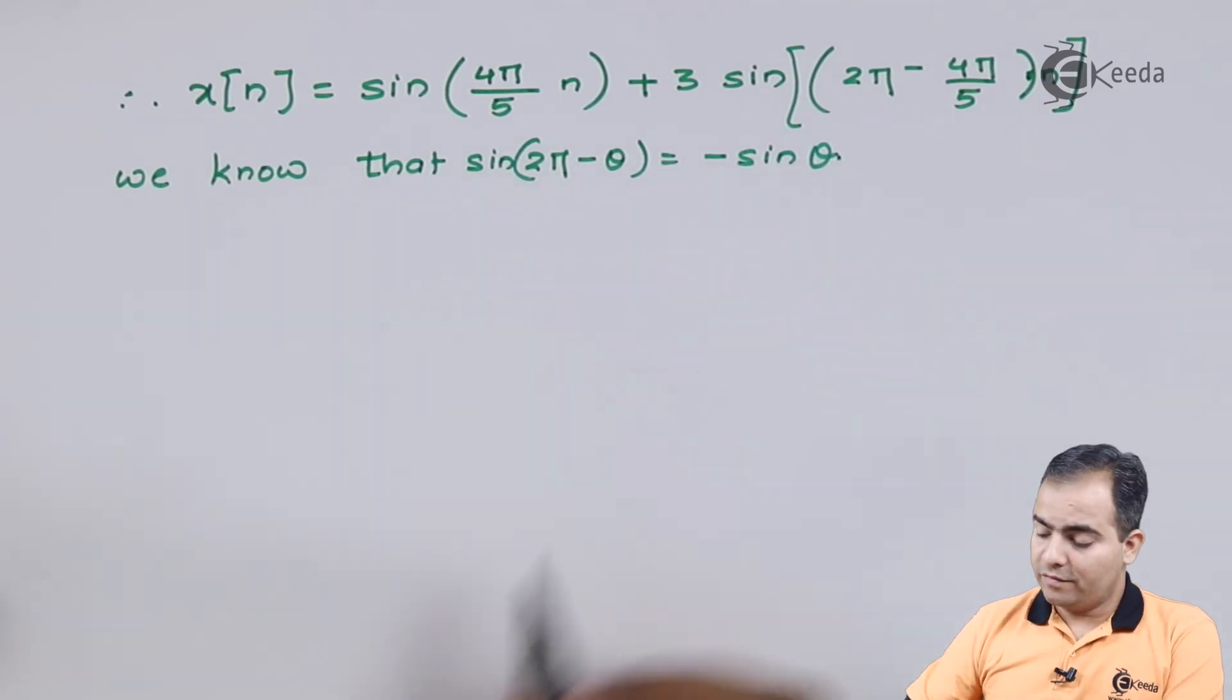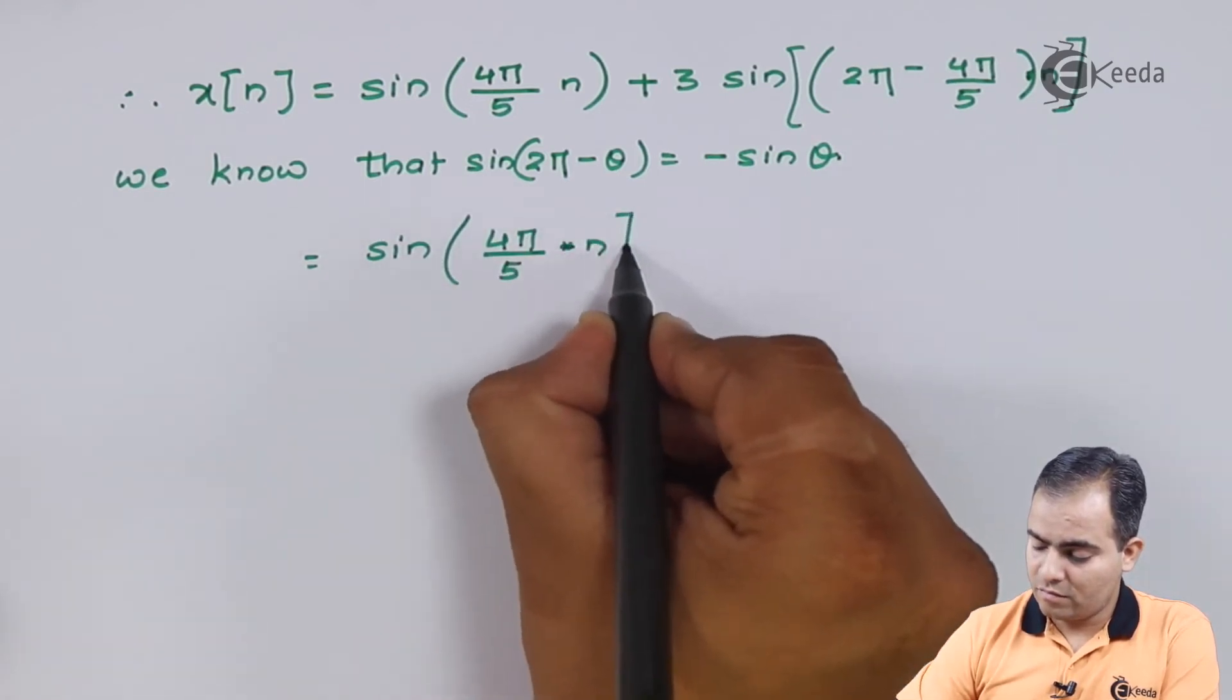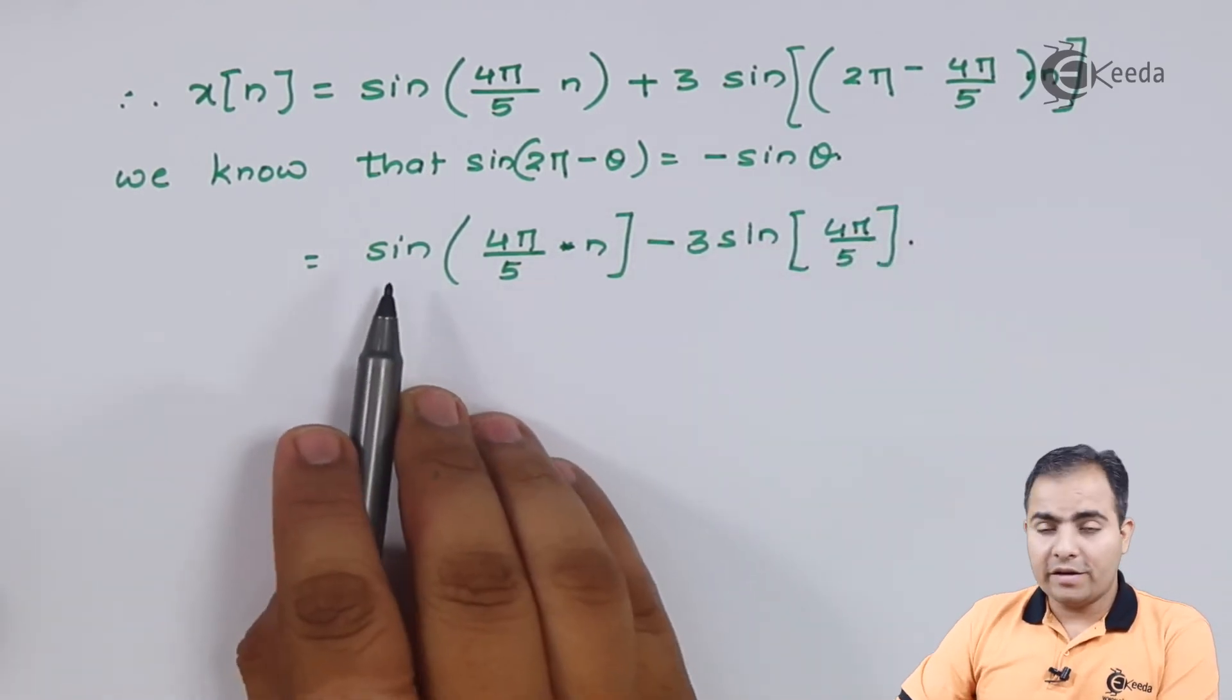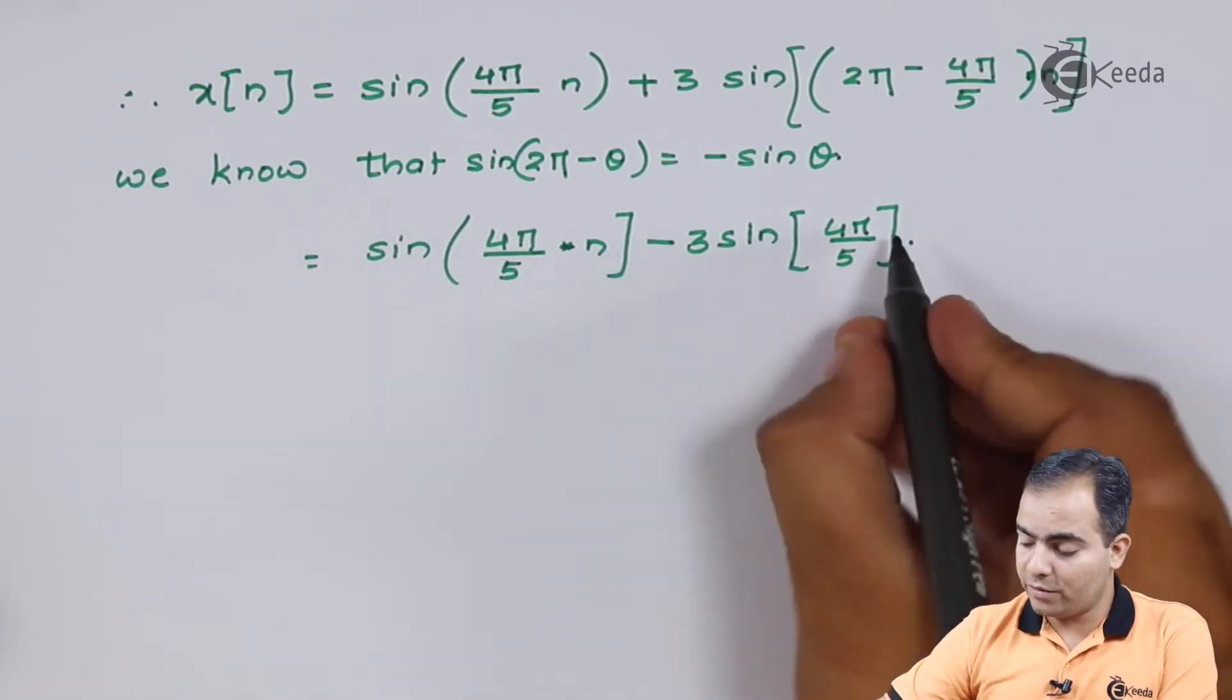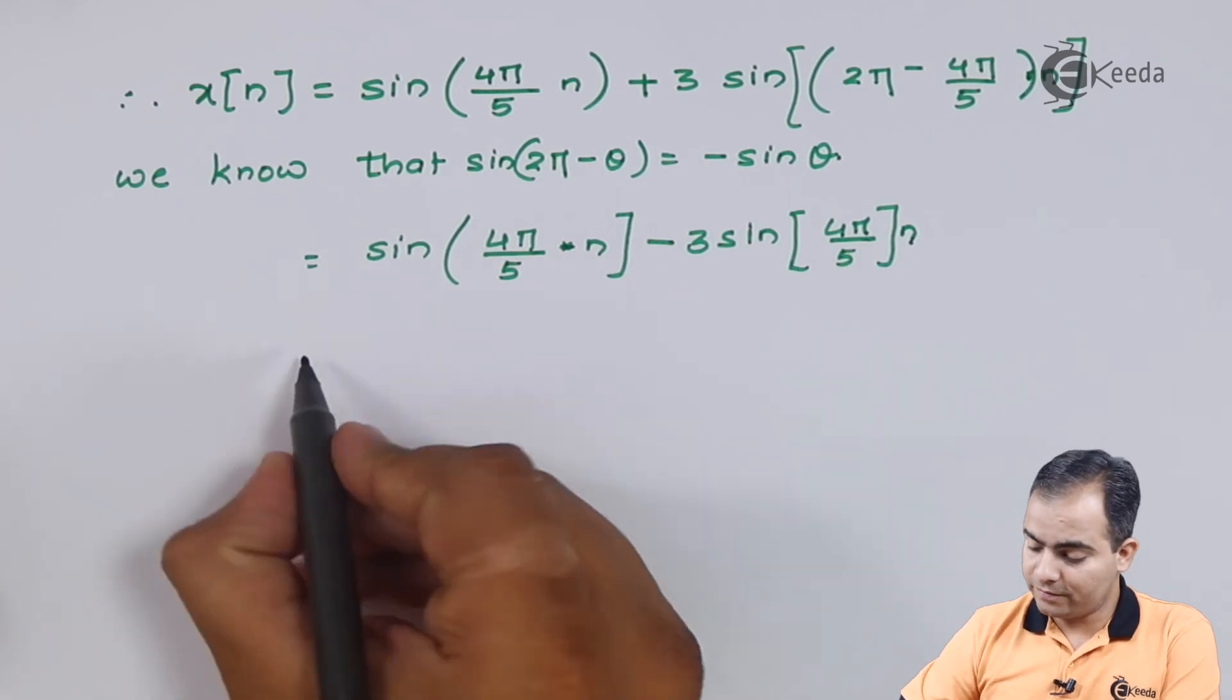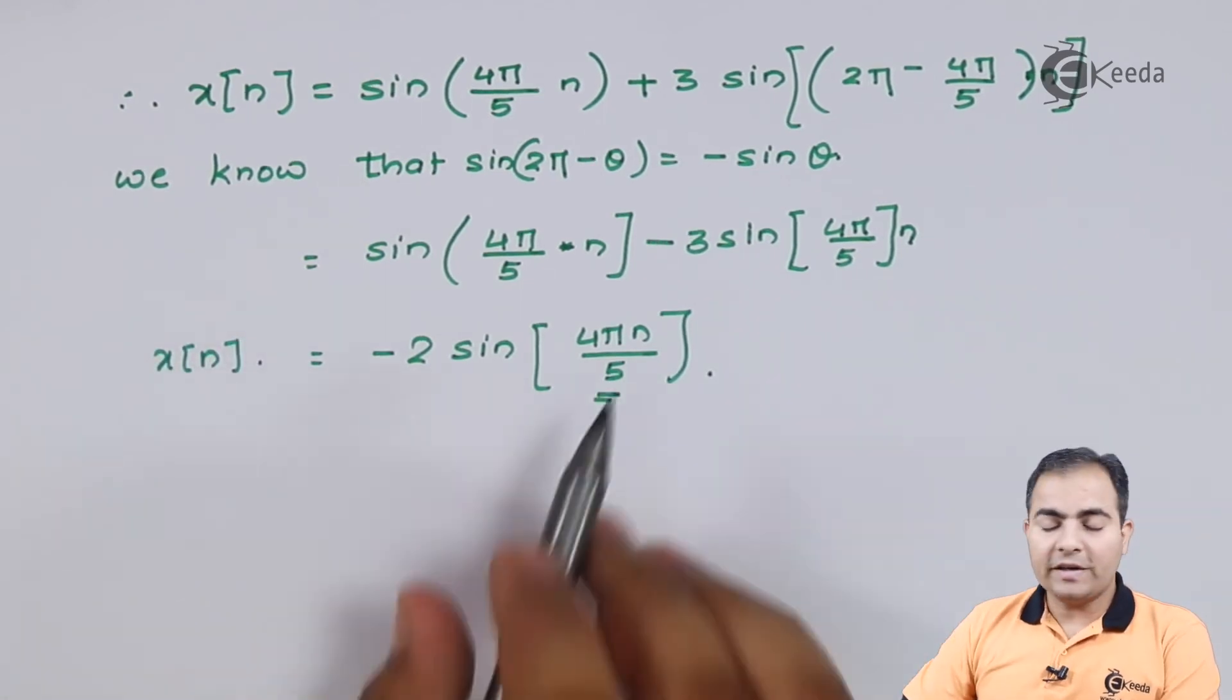We will substitute this formula. Now look, what we have: sin(4π/5·n) - 3sin(4π/5·n). Both sin(θ) are the same, so 1 - 3 is -2.